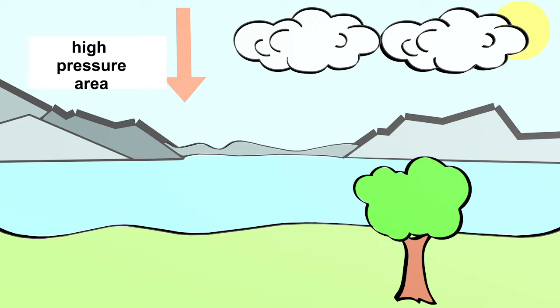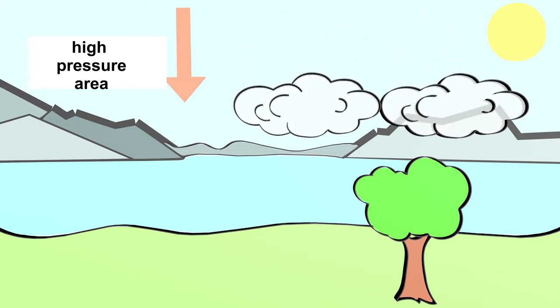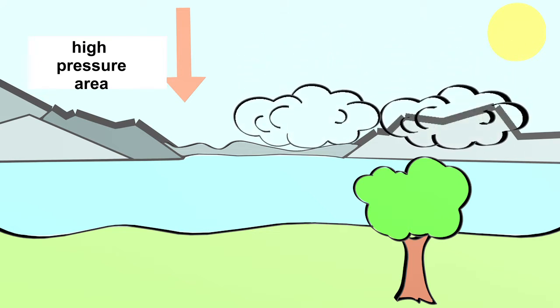Clouds are also pushed downwards. Clouds are nothing more than tiny drops of water or ice crystals. The deeper the cloud sinks, the warmer the air that surrounds the cloud. The ice crystals begin to melt and at some point the small water drops evaporate into invisible water vapor. Because of this, we can usually see the sun in a high pressure area.